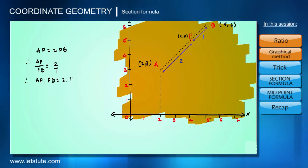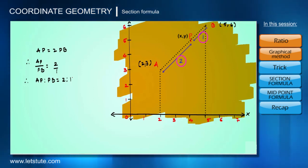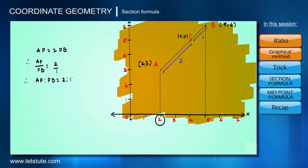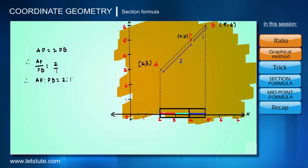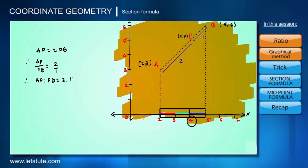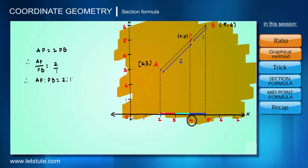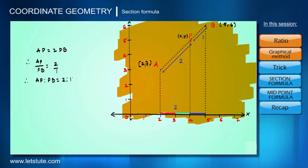Let's start with the X coordinate. The X coordinate of A is 2 and the X coordinate of B is 5. Looking at the ratio 2:1, we need to find the value of X such that if the distance between 2 and 5 is divided into three equal parts, two of the parts will be towards point 2 (X coordinate of A) and one part towards 5 (X coordinate of B). This can only be done by the point 4 on the X axis, so the X coordinate of P is 4. You can see that the distance between 2 and 5 is divided in the ratio 2:1.